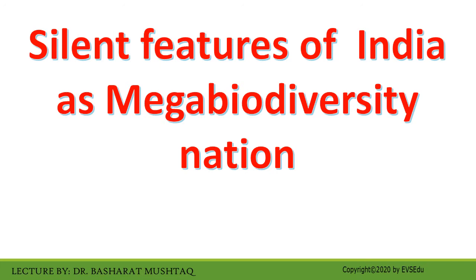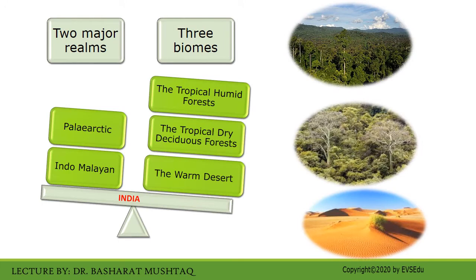Let us now discuss the salient features of India as a mega-biodiversity nation. India as a mega-biodiversity nation has various salient features which are responsible for making India a great diversity nation. India has two major realms — the Palaearctic and Indo-Malayan realm — and three major biomes: the tropical humid forest, the tropical dry deciduous forests, and the warm forests. Here are pictures of these three biomes.